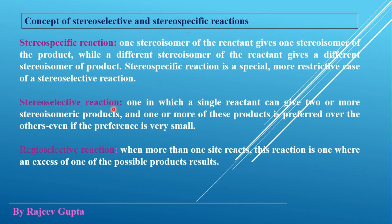In a stereoselective reaction, there is freedom of selection — more than one type of stereoisomer can form during synthesis. The definition is: a stereoselective reaction is one in which a single reactant can give two or more stereomeric products, and one or more of these products is preferred over the others, even if the preference is very small. These types of reactions are stereoselective, where specific stereoisomers form preferentially. These definitions are written based on the nature and stereo configuration of the reactant.